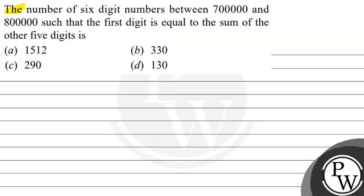Hello, let's see the question. The question says: the number of six digit numbers between 7 lakhs and 8 lakhs such that the first digit is equal to the sum of the other 5 digits. Option A: 1512. Option B: 330.